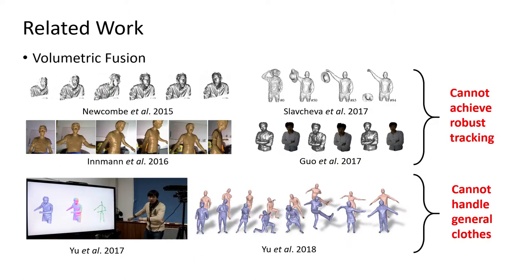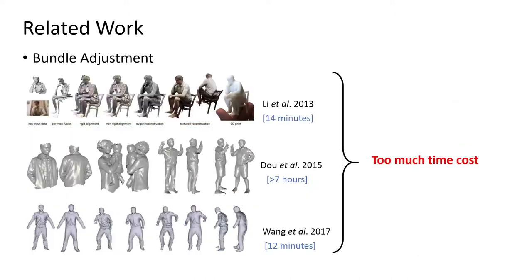The second branch is fusion-based methods. These methods reconstruct non-rigid objects from a single RGBD camera, but they cannot achieve robust tracking or handle general clothes. The final branch is bundle adjustment. These methods can generate robust 3D self-portraits, but they are too heavy for applications.